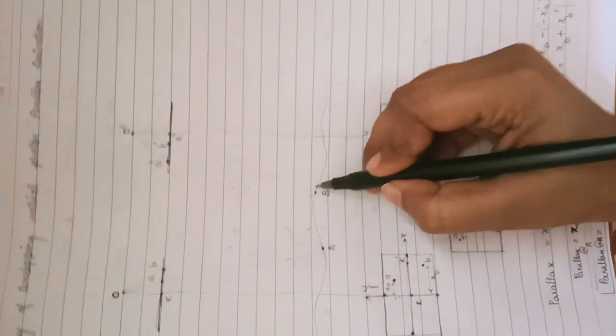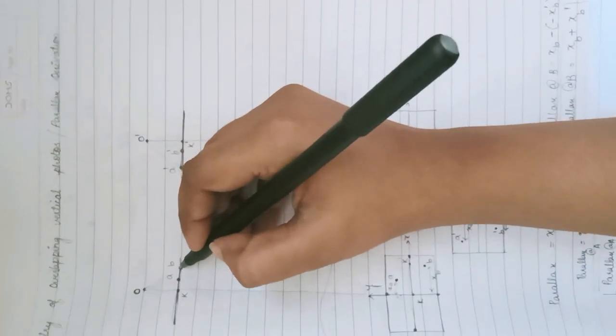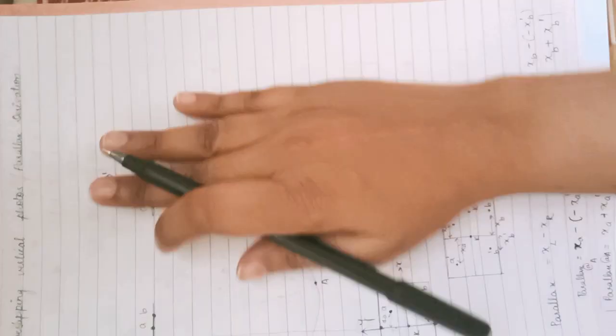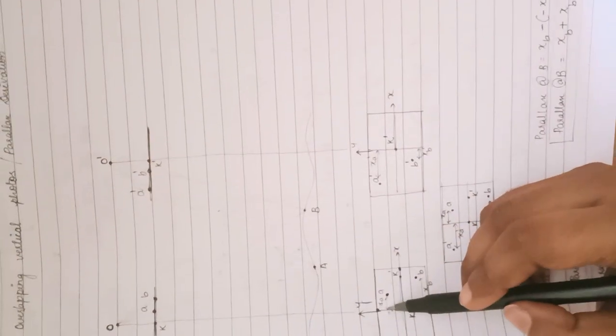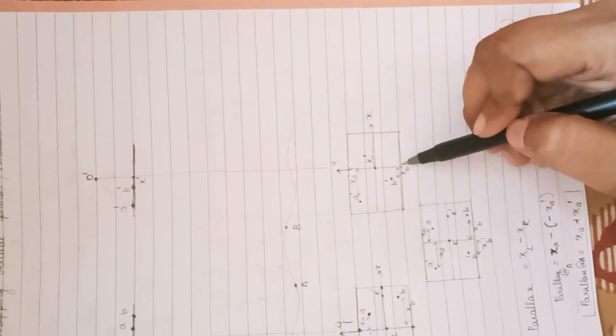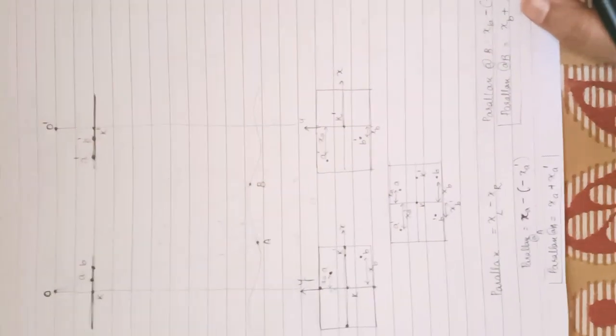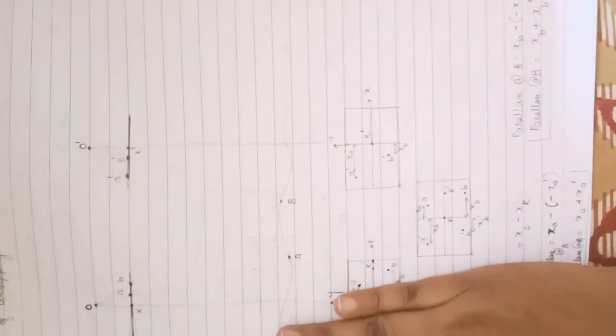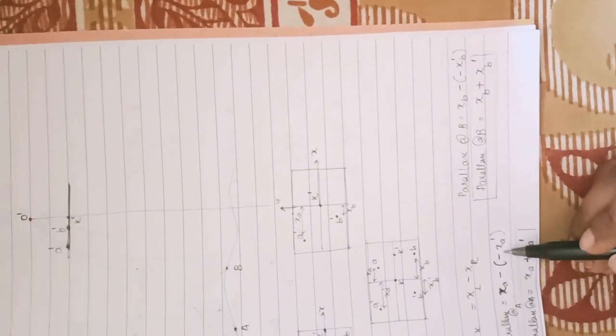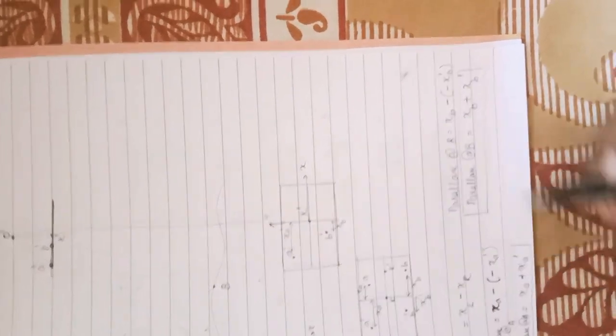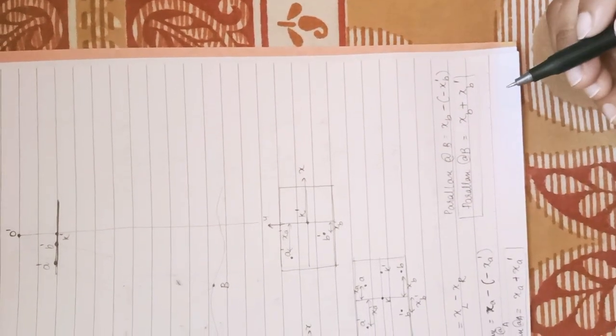To summarize the diagram: this is point A, this is point B, this is the center, and these are the exposure points O and O dash. On the photos, A, B, A dash, and B dash are shown — the first set from the first station and the second set from the second station. The distances from the center are X A, X B, X A dash, and X B dash. When the two photos are merged, parallax equals X left minus X right, giving parallax at A as X A plus X A dash and parallax at B as X B plus X B dash.